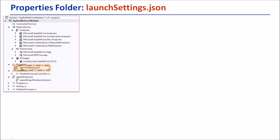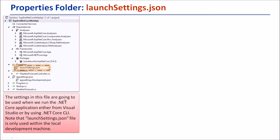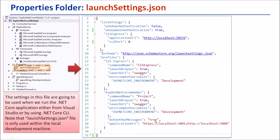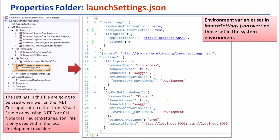The next item is the Properties folder. By default, inside the Properties folder, there is only one file — the launchSettings.json file. The settings in this file are used when we run the .NET Core application, either from Visual Studio or by using the .NET Core CLI. Note that the launchSettings.json file is only used within the local development machine. Environment variables are set in this file. There are three objects in this file.